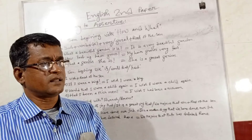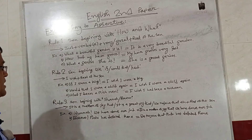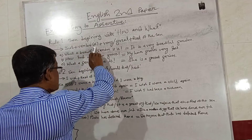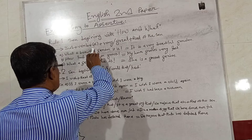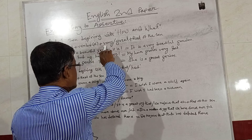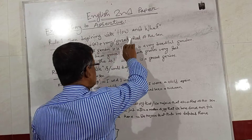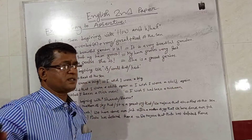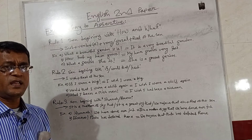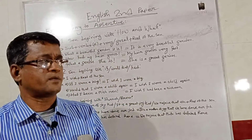I think the point is clear. So, once again, I repeat the structure: first, the subject; then the verb; then A — only if there is A or AN in the sentence, otherwise we do not use it; then 'very' if there is an adjective, and 'great' if there is a noun; then the rest of the sentence. Note it down — keeping this rule in mind will make it easier.